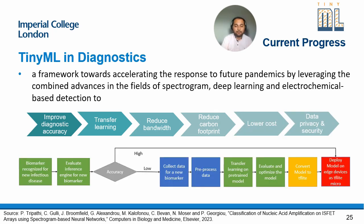For a new biomarker recognized for a new infectious disease, we evaluate the inference engine. If accuracy is high, we deploy straight away. If accuracy is low, we collect data again, pre-process, transfer-learn on the pre-trained model, evaluate and optimize the model, convert it to TF Lite Micro, and then deploy it.